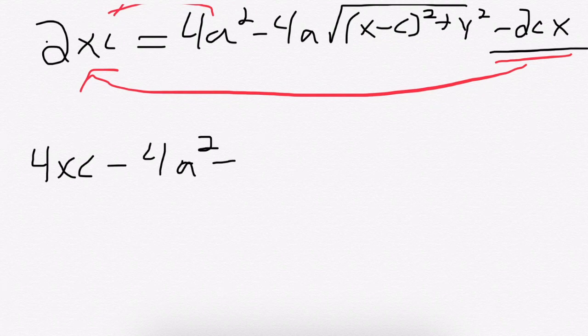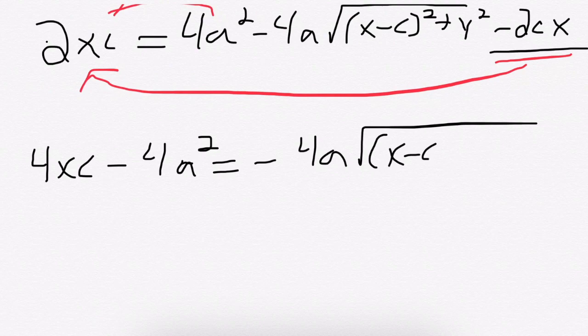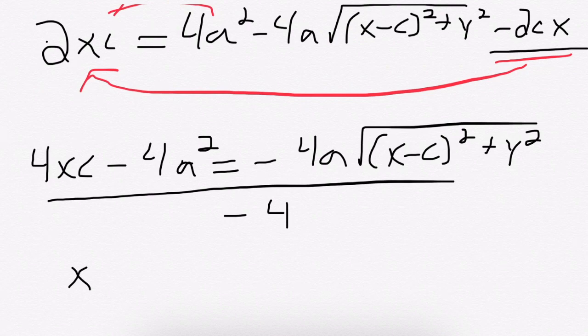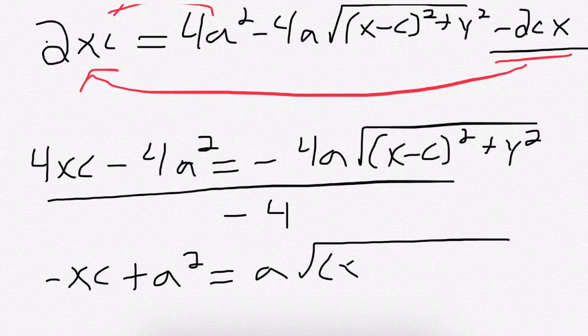We notice all terms are divisible by 4, so for our sake, I'm going to divide everything by 4. Actually I can divide by negative 4, which would make this negative xc plus a squared equals a times the square root. Not bad so far. And finally, I have a square root all by itself, and I can square both sides.